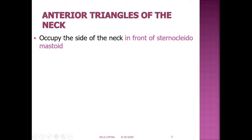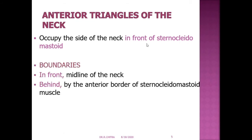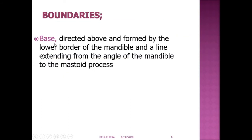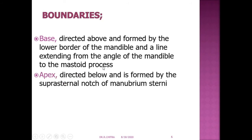Now we will look at the anterior triangle of the neck. There are two anterior triangles on the two sides of the neck; they occupy the side of the neck in front of the sternocleidomastoid muscle. Boundaries: in front, the midline of the neck; behind, the anterior border of the sternocleidomastoid muscle. The base is directed above, formed by the lower border of the mandible and a line extending from the angle of the mandible to the mastoid process. The apex is below, formed by the suprasternal notch of the manubrium sterni.